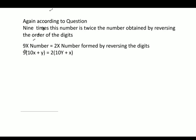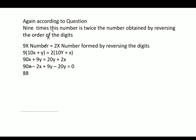Solving: 90x plus 9y equals 20y plus 2x. Rearranging: 90x minus 2x plus 9y minus 20y equals 0, giving 88x minus 11y equals 0. Taking 11 as common: 8x minus y equals 0. That is equation number 2.